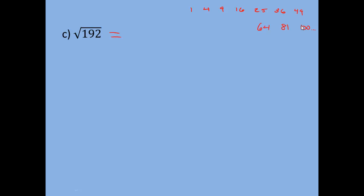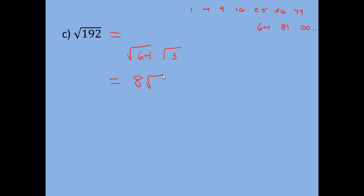So you want to break 192 down to one of these perfect squares and then another factor, and you want the highest one that factors 192. If you try dividing 192 by some of these perfect square factors, you'll find the highest one that's a factor is 64. So I'm going to break this down to the square root of 64 times the square root of 3, because 64 times 3 gives you 192. There are other perfect square factors — you could have used 16 or 4 — but the highest is 64, so we use that to simplify completely on the first shot. The square root of 64 is 8, and the square root of 3 just stays, so the answer is 8√3.